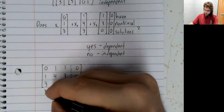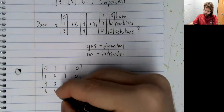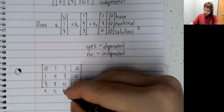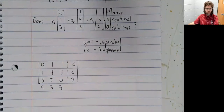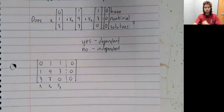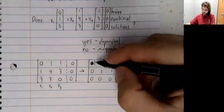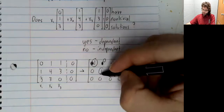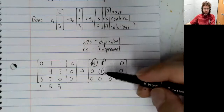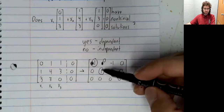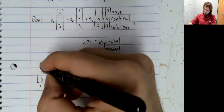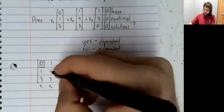Each of these columns corresponds to a variable, and we perform Gauss-Jordan elimination. In this particular case, our leading entries are here and here, so our pivot positions are there.